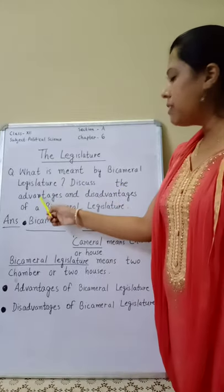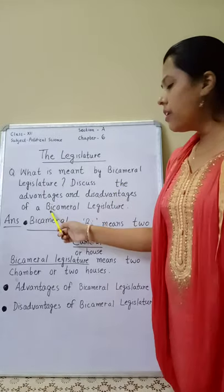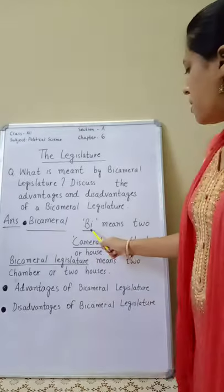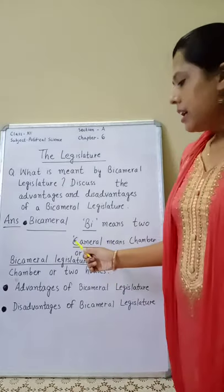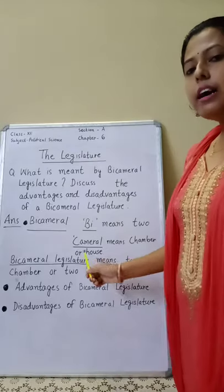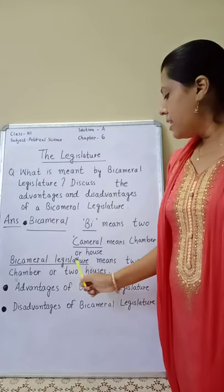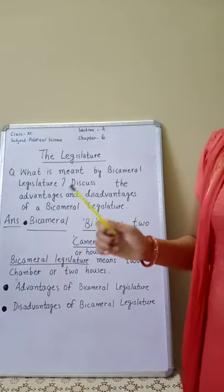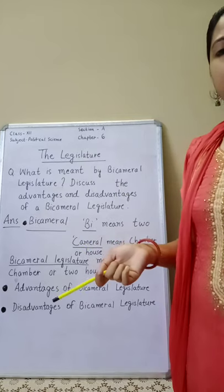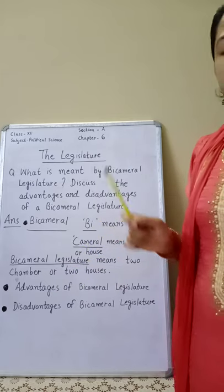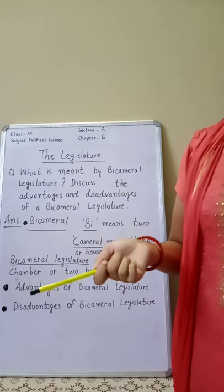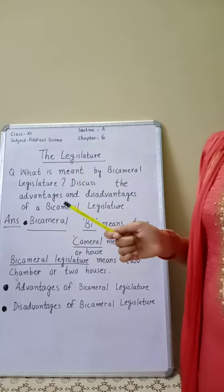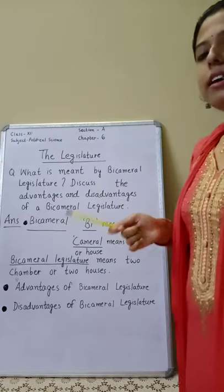We will discuss the advantages and disadvantages of a bicameral legislature. First, the definition: 'bi' means two, 'cameral' means chamber or house. So bicameral legislature means two chambers or two houses — a lower house called the first house and an upper house called the second house. America, Britain, and India are classic examples of bicameral legislature.